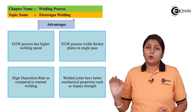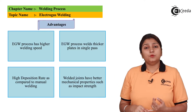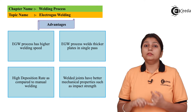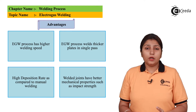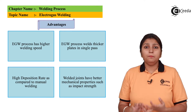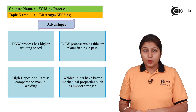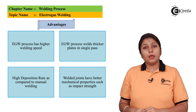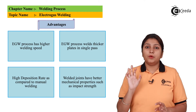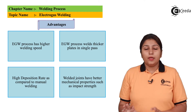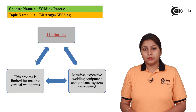Talking about advantages and disadvantages: the speed of welding is high and it can weld thicker plates. As for disadvantages, only a vertical arrangement is required, and the arrangement is very expensive.